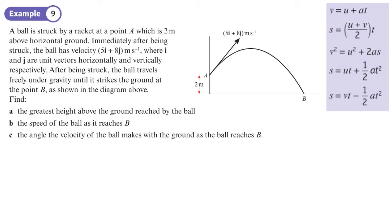Next question: the initial velocity is given as a vector — 5i + 8j. So the initial velocity horizontally is 5 and vertically is 8. We don't need to work out sine or cosine of anything — it's given to us directly. The acceleration is −9.8j.